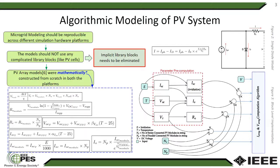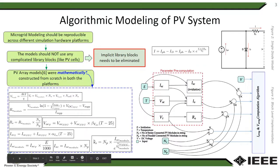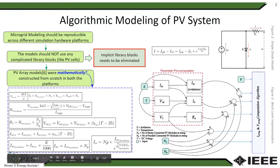Inside the blue square, you can see that different mathematical steps were taken to compute the different parameters associated with this modeling. For example, we begin with thermal voltage modeling, then we compute the series resistance, then we compute the open circuit terminal resistance, short circuit terminal current, and finally we compute the dark current or IO.